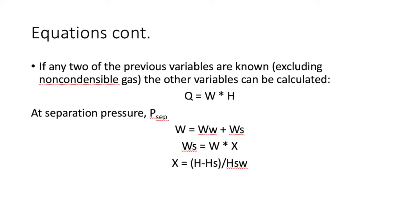We use these variables in the following equations. The first equation is exclusively for saturated conditions — when a liquid and vapor mixture exists together at a given temperature and pressure. If any two of the flow characteristic variables are known for a well, the others can be calculated, where heat flow equals total mass flow times fluid enthalpy. At separation pressure, total mass flow equals steam plus water flow, and steam flow equals total mass flow times the dryness factor.